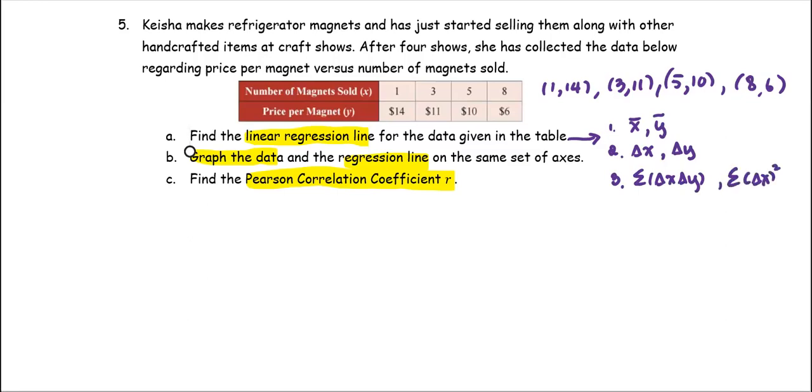In step 4, we're going to compute m, the slope of the linear regression line, by using the formula: the summation of delta x delta y divided by the summation of delta x squared. And then b will be computed by using ȳ minus m times x̄.